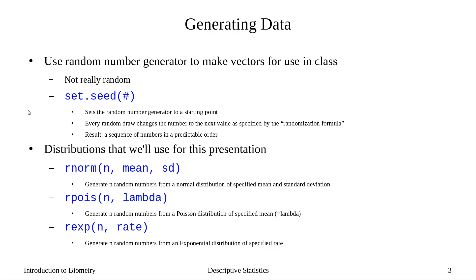When random numbers are generated by the computer, they're not really random. What happens is the computer uses the system time as a starting point, and then it uses a formula to figure out the next starting point for the random number. If we were to start our random number generation at exactly the same time, then in theory we should get exactly the same numbers. But there's always going to be a slightly different time when we hit the enter key — milliseconds off — and that's going to be enough to generate a new sequence of numbers. However, we can actually tell R to start at a specific number using set.seed.